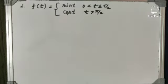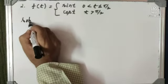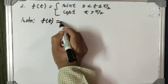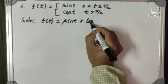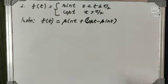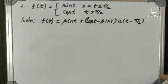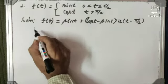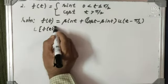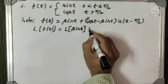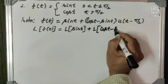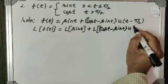The next problem: find the Laplace transform of a function by expressing it in terms of unit step functions. We express the given function as f of t equal to sin t plus cos t minus sin t into u of t minus pi by 2. This is the way to express the given function in terms of unit step function.